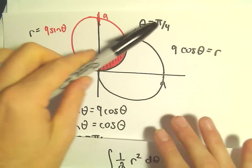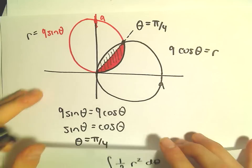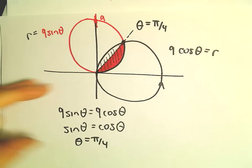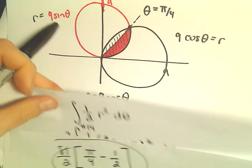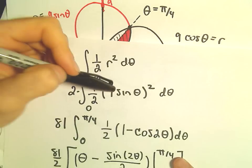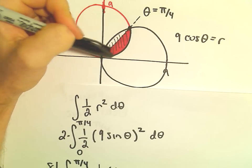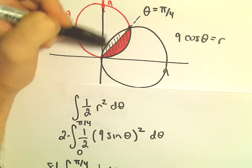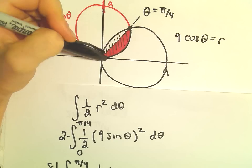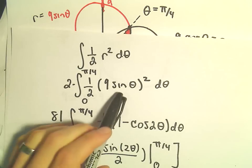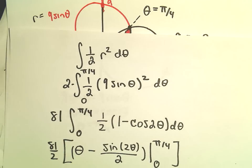To find the point of intersection, just set the curves equal to each other, just like normal. And then the only curve we're using in this case is the 9 sine theta, just because that is the right side of the shaded region that I'm interested in. It's bounded by that curve 9 sine theta. So that's the function that we have to use.